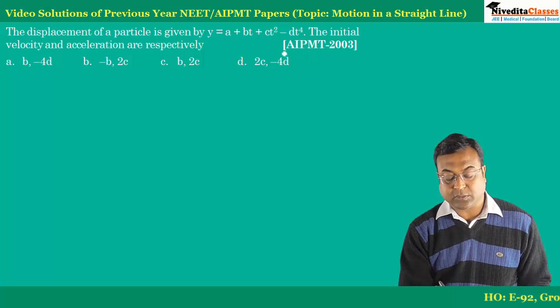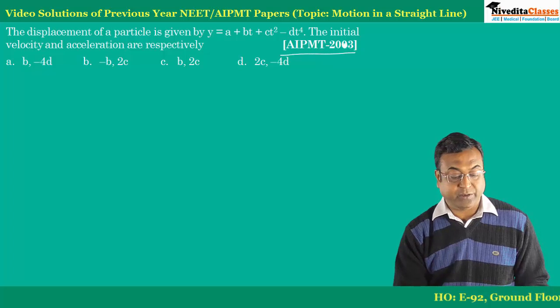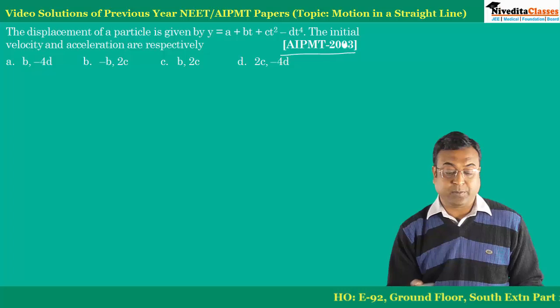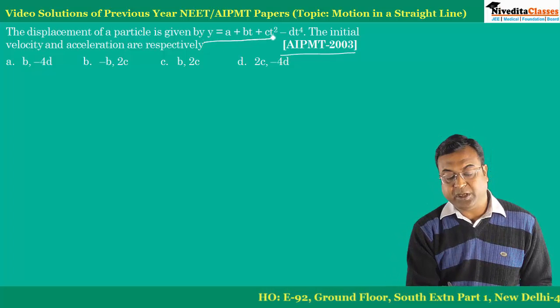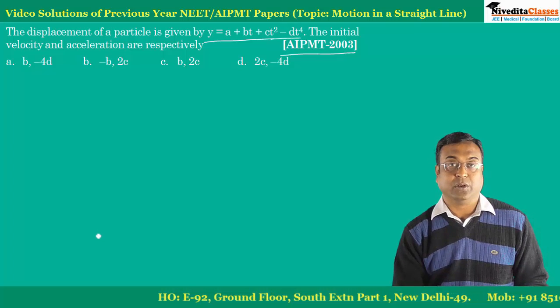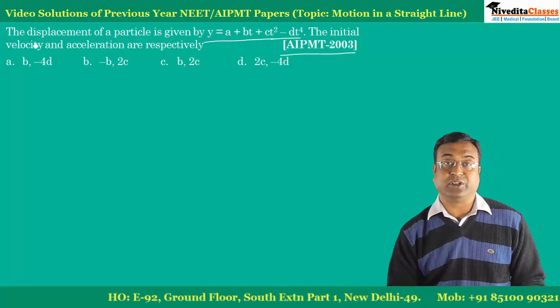This question was asked in AIPMT 2003. What our question says that displacement of a particle is given by y is equal to a plus bt plus ct square minus dt raised to power 4. Now we have to find initial velocity and acceleration.